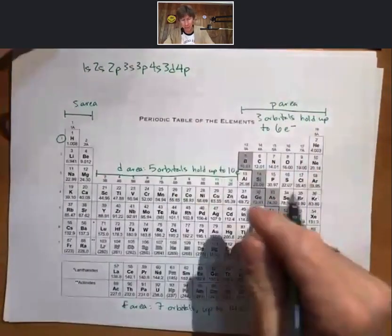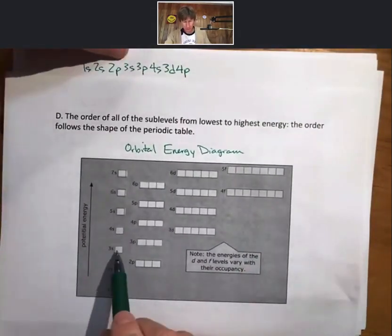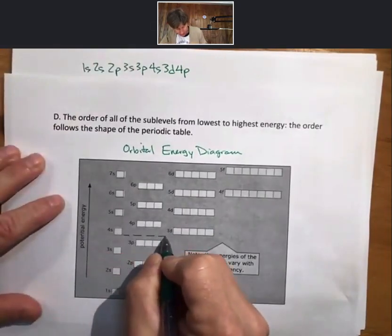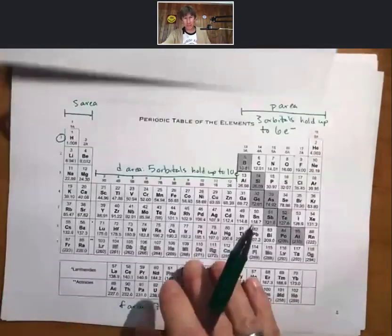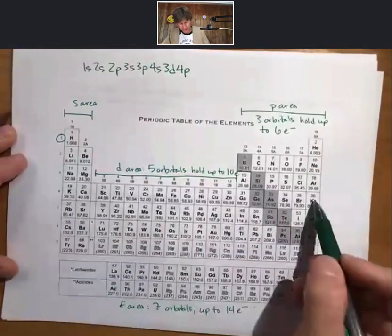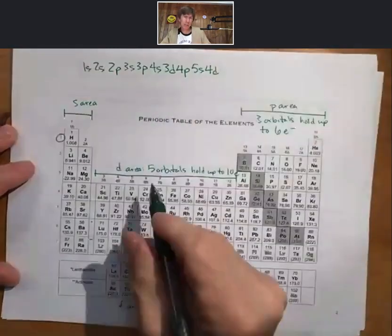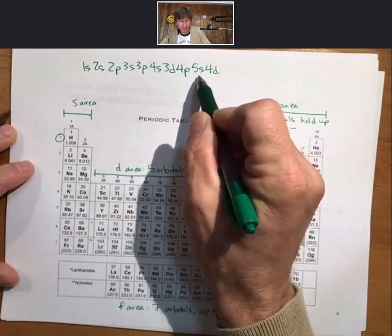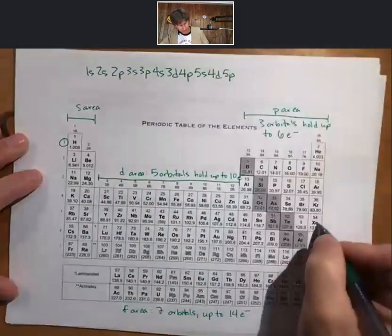And then as we keep going, we just did a ding, 5s. 4d goes 3d, 4d, 5d, so 4d. And one thing you can remember is that the d's are always one principal energy level, one n value behind the s's. The s's and p's are always the same now, so this is going to be 5p, ding, 6s.